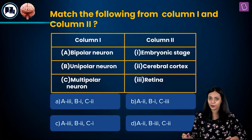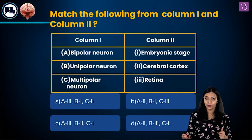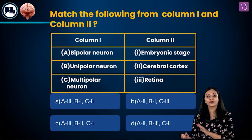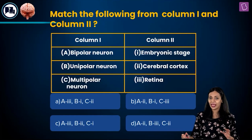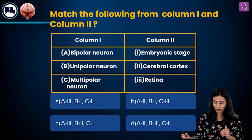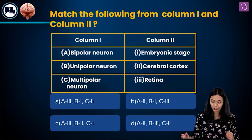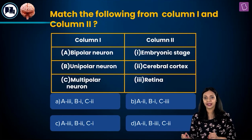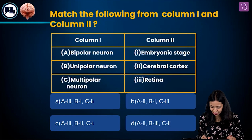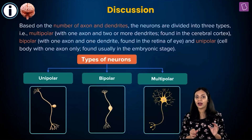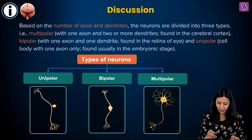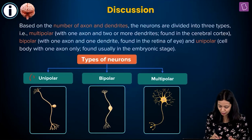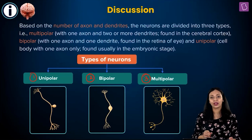Here's a match the following type of question. Under column 1, different types of neurons are given — bipolar neuron, unipolar neuron and multipolar neuron. Under column 2 we have their locations: embryonic stage, cerebral cortex and retina. Based on how many axons and dendrites are present, neurons are classified as unipolar, bipolar and multipolar.